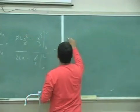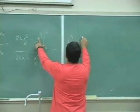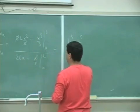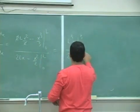2, 2 cancel, L cubed minus L cubed over 3 divided by 2L squared minus L squared over 2.